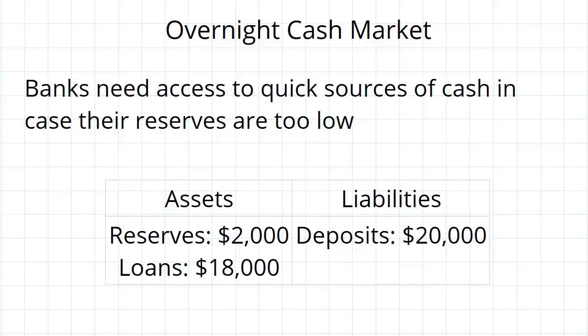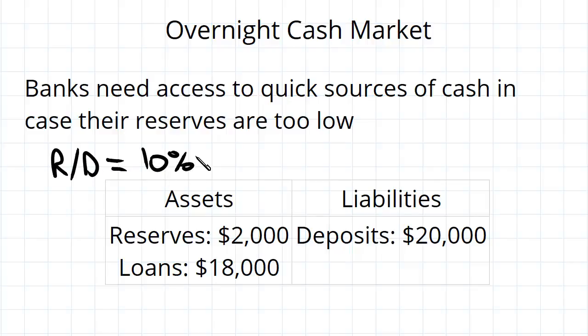Now consider a bank that has these assets and liabilities. Right now it's got a reserve to deposit ratio of 10%. At this level it might be fairly confident that over the course of the day it is not going to get withdrawals large enough that its reserves will be depleted. As long as the withdrawals made are lower than the reserves it has, then it'll be fine.